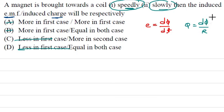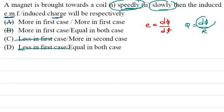For the charge parameter: Q = dφ/R. The charge depends only on the change in flux and the resistance of the circuit. Whether you bring the magnet fast or slowly, the same amount of flux change occurs and the resistance is unchanged, so Q is the same in both situations — equal in both cases. Therefore option B is the correct one.